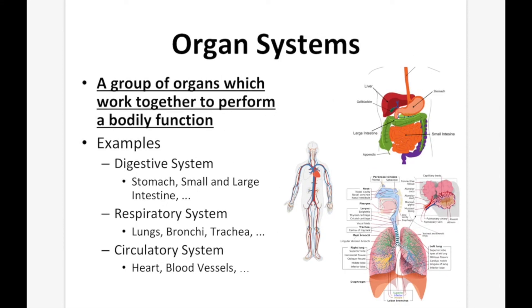After organs, we have organ systems. An organ system is a group of organs which work together to perform a bodily function. For example, the digestive system involves the stomach and small and large intestine, among others. The respiratory system involves the lungs, bronchi, and trachea. And the circulatory system utilizes the heart, blood vessels, etc., to perform the circulatory system functions.